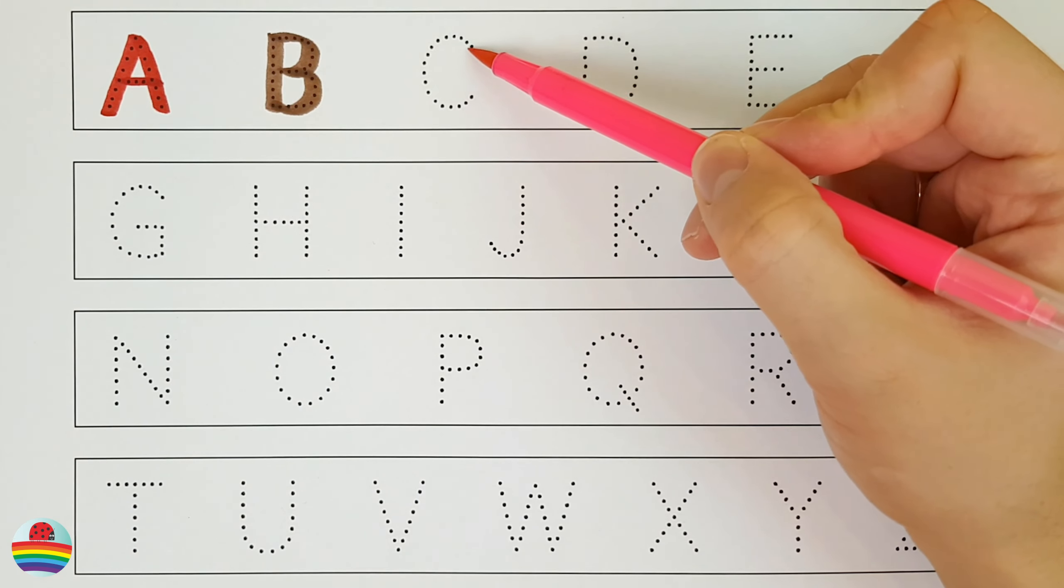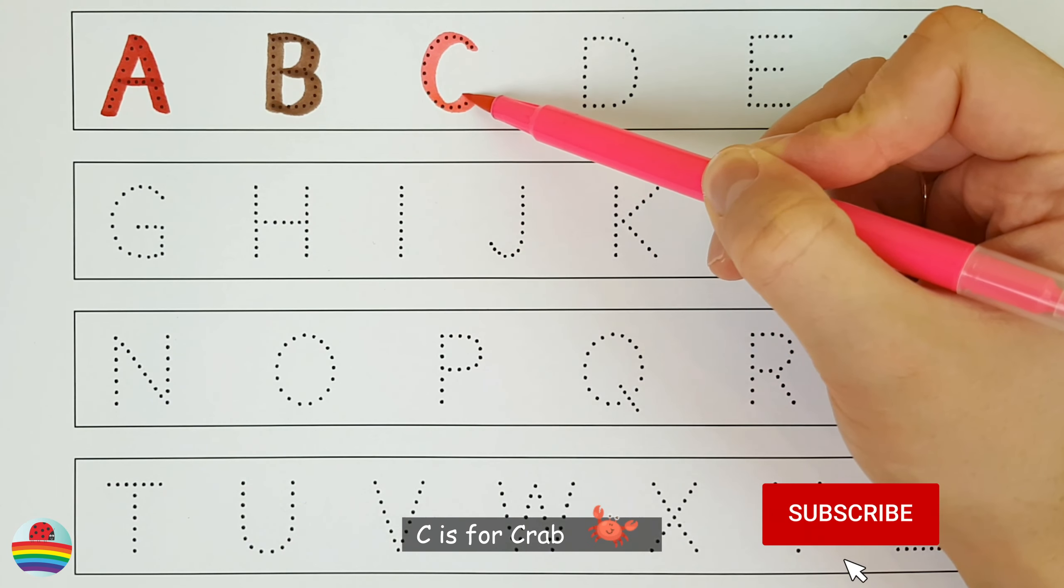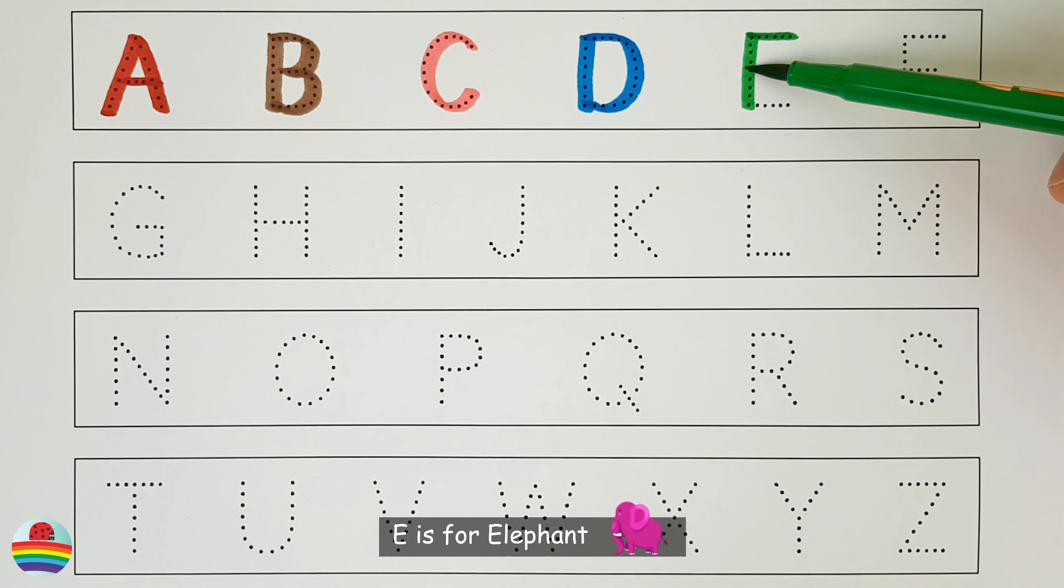A. A is for astronaut. A. B. B is for bear. B. C. C is for crab. C.